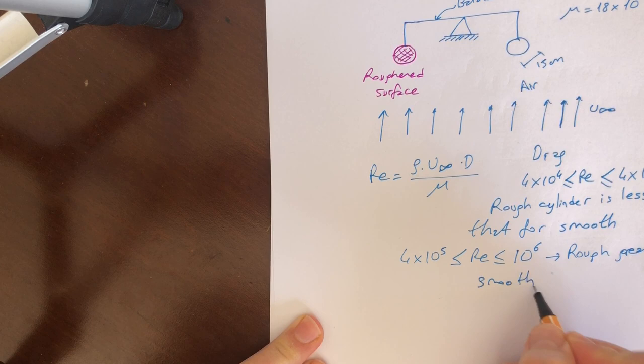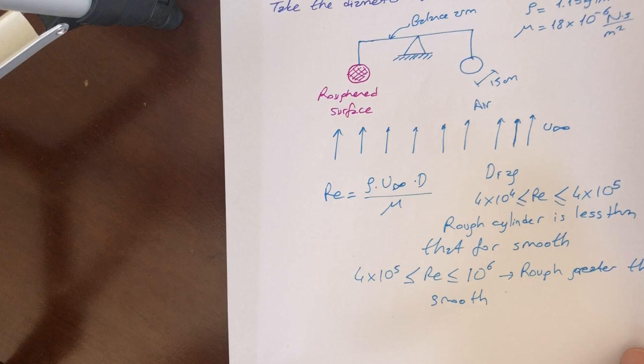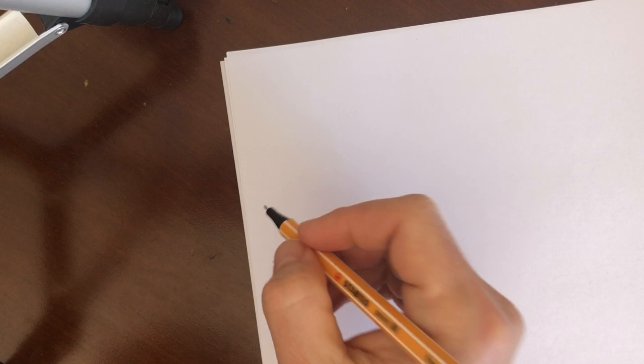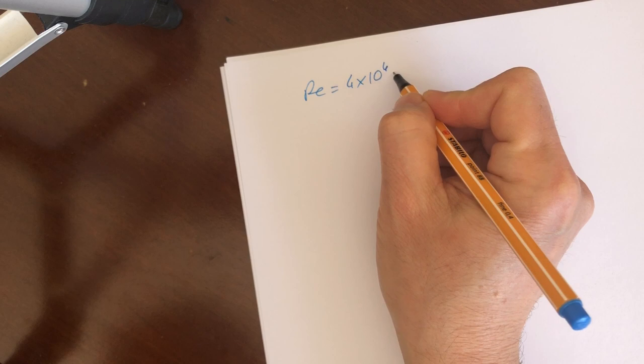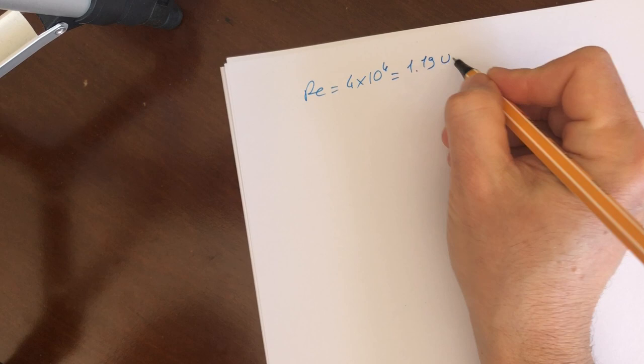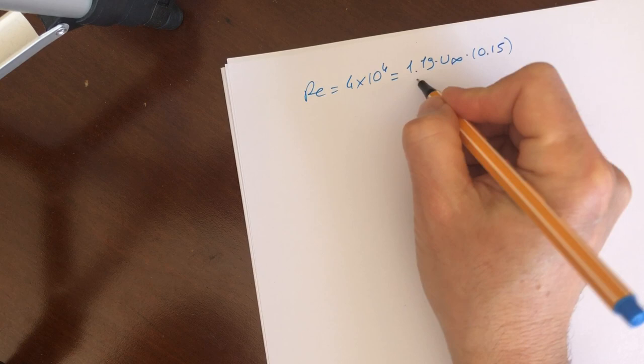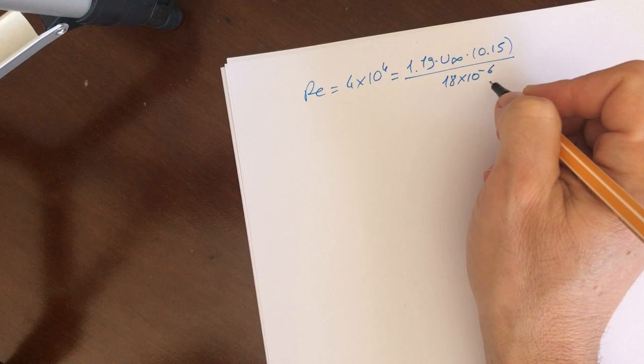Now we have at least Reynolds number value for this equation. Let's go and calculate the Reynolds number. Reynolds number we can choose as 4 by 10 to the 4 equal to, let's put the values of density, and then we don't know u infinity. And then we have a diameter value and then dynamic viscosity 18 times 10 to the minus 6.